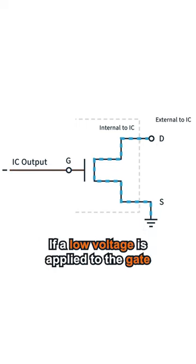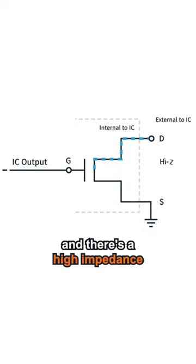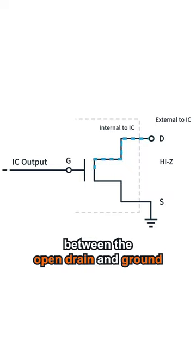If a low voltage is applied to the gate, then the switch opens and there is a high impedance between the open drain and ground.